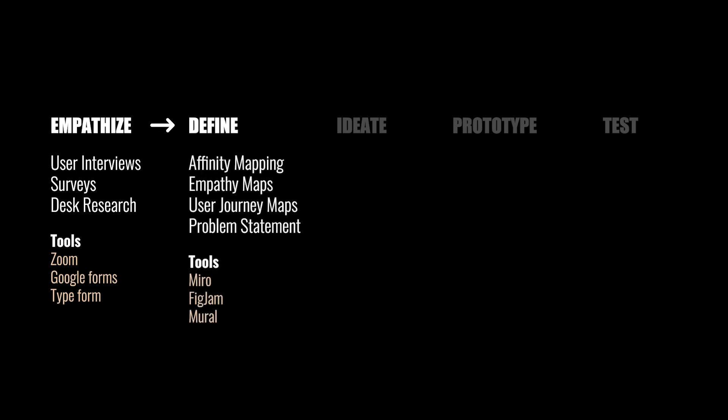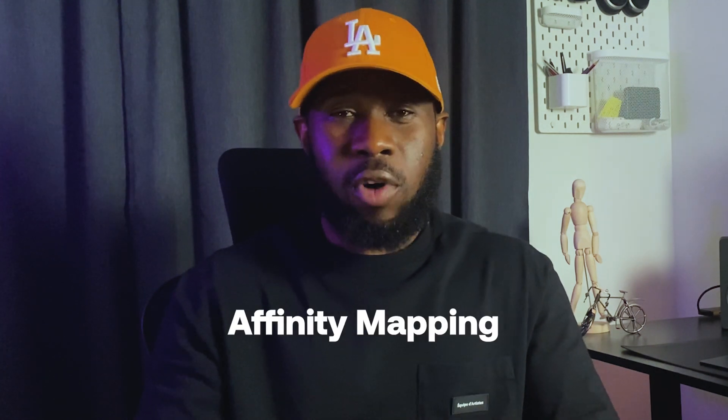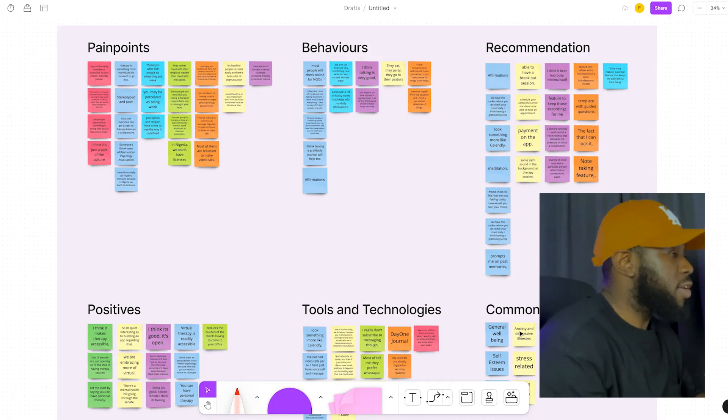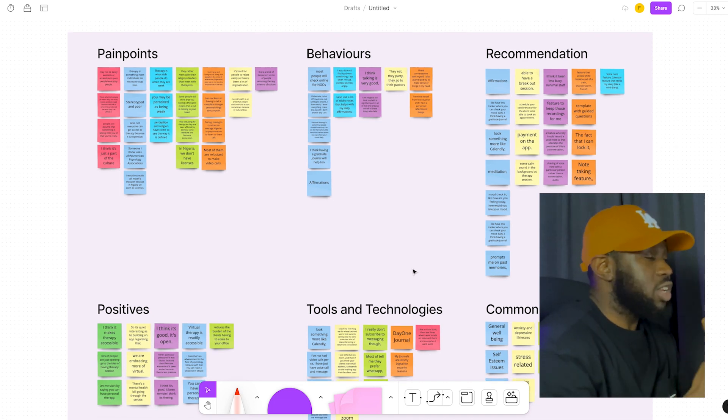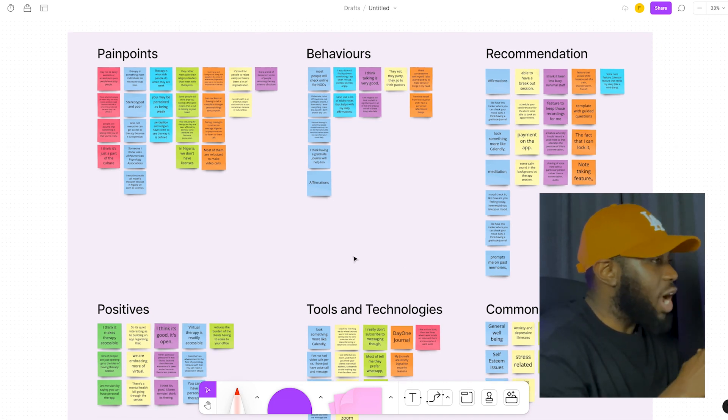Next, we move to the problem definition stage where we try to understand and define the problem by analyzing all the insights and findings from the user research at the empathize stage. The process of analyzing feedback and findings from user interviews is called affinity mapping. It involves finding similar themes and topics that the interview participants spoke about and categorizing them in groups that make sense to the researcher or designer — this is also called card sorting. For example, while carrying out the affinity mapping for this project, all the key points from the conversations and user interviews were grouped into cards according to their similarities and themes.